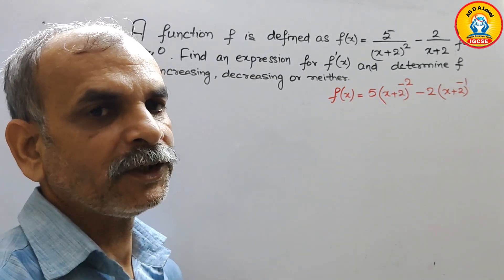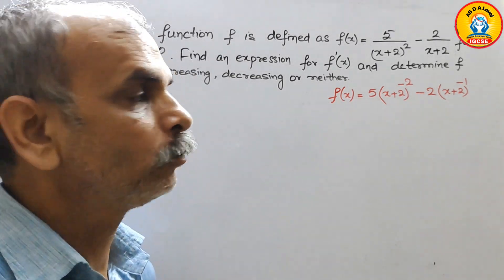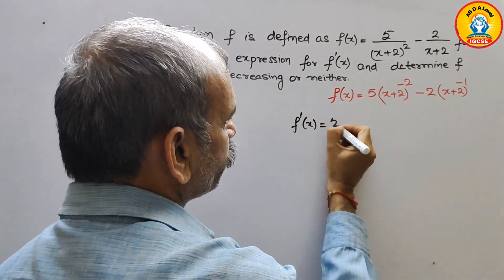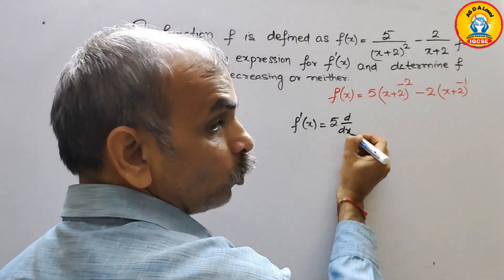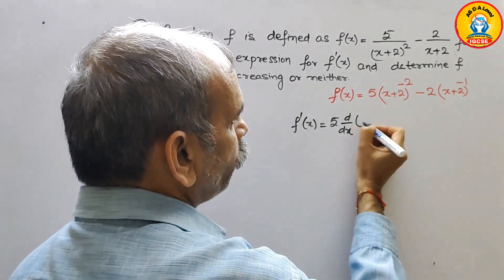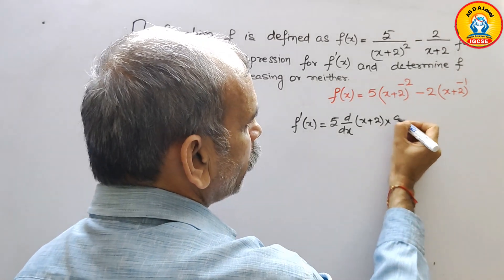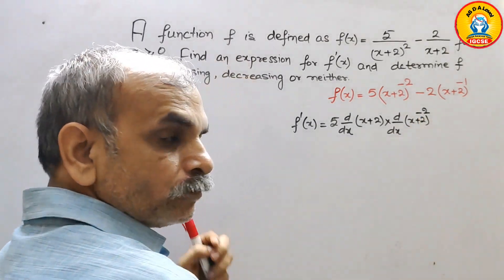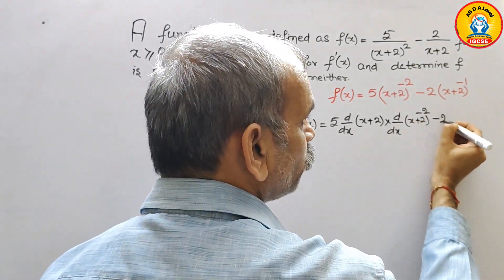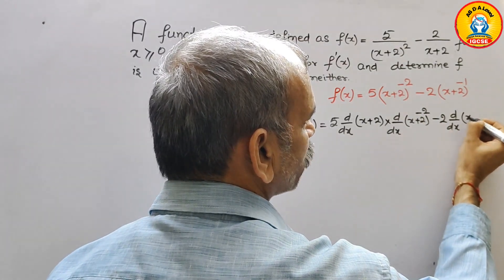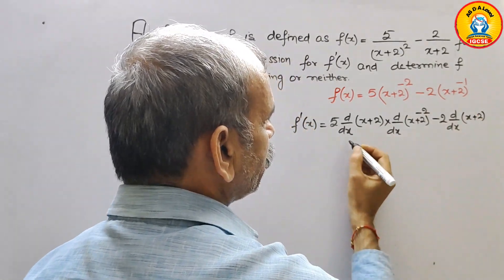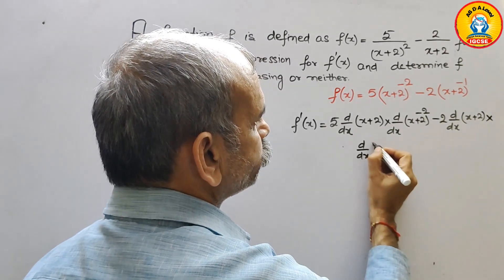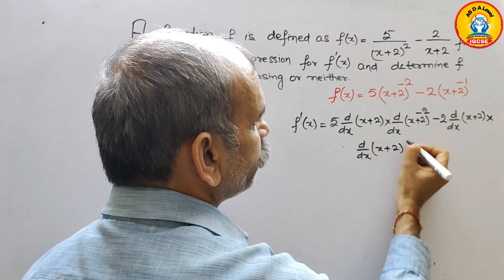Now we have to go for differentiation of this, that is f'(x). By the chain rule, f'(x) is equal to 5 times d/dx of (x+2)⁻² plus the chain rule applied to minus 2 times d/dx of (x+2)⁻¹.